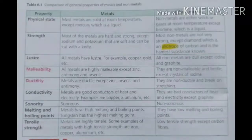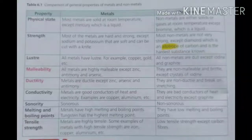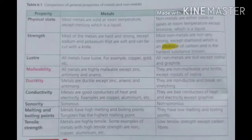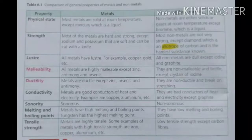The first property is physical state. Most metals are solid at room temperature. One exception is mercury, which is in liquid form. Non-metals are either solid or gaseous at room temperature, with one exception — bromine, which is liquid in nature.